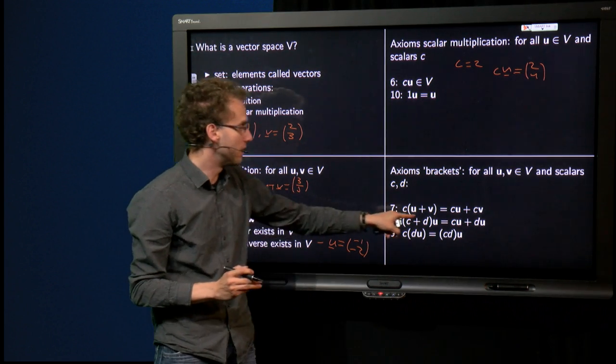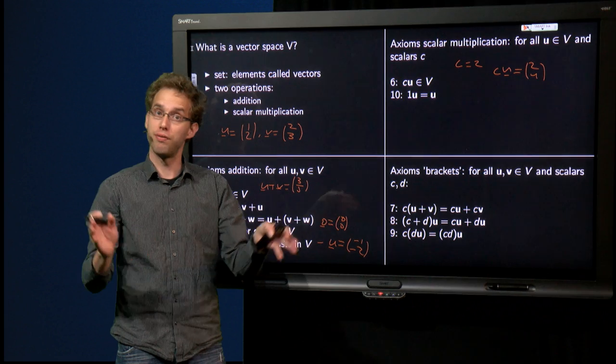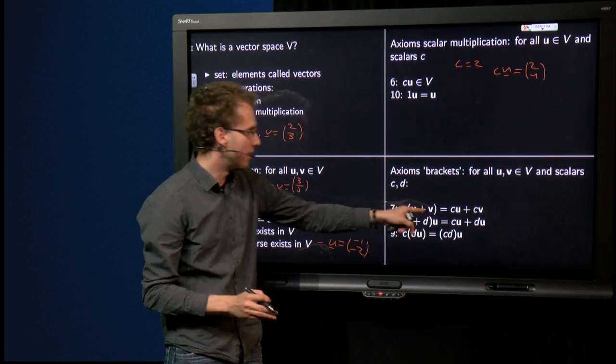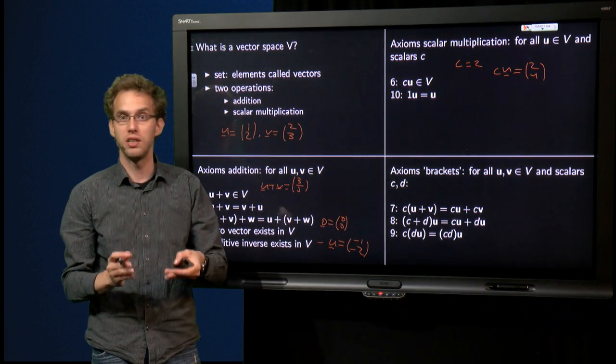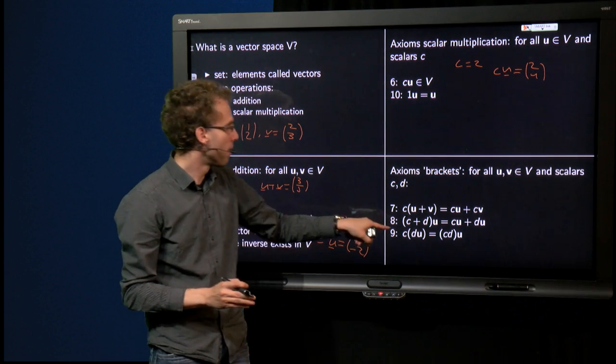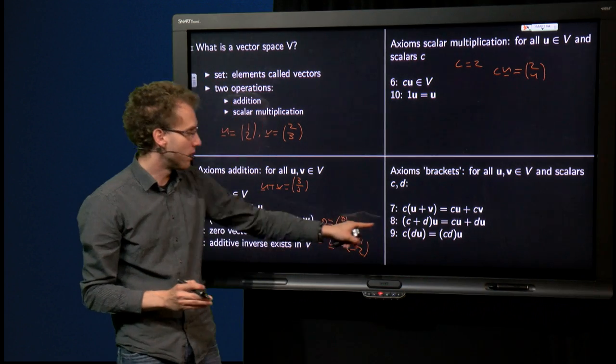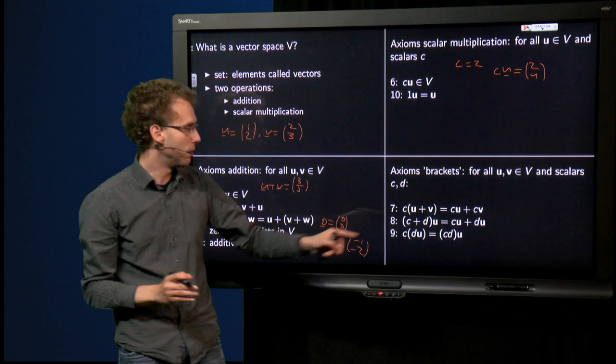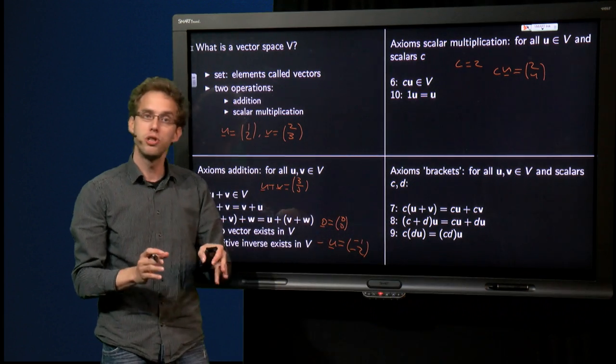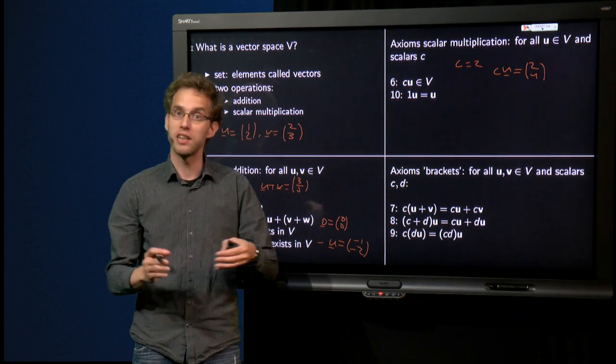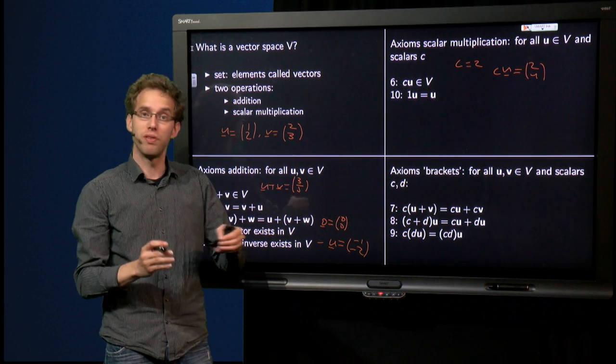Something similar for (c plus d) times u. It doesn't matter whether we first add up c plus d or compute c times u and d times u and add them up. And similarly for the last one, c times (d times u) has to equal (c times d) times u. You'll see that all three have to do with brackets and always work for vectors in Rn.